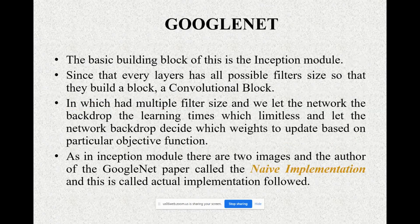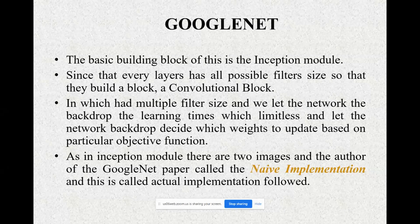The third network is GoogLeNet. The basic building block of GoogLeNet is the inception module. Every layer has all possible filter sizes, building a convolutional block with multiple filter sizes. The network decides which way to update based on the particular objective function. There are two versions shown in the GoogLeNet paper: the naive implementation and the actual implementation.